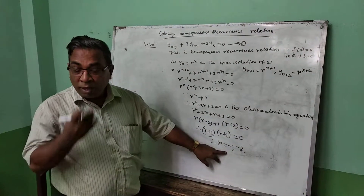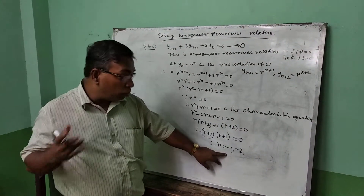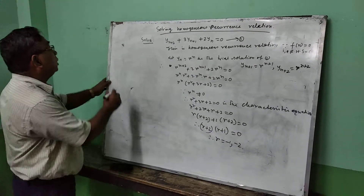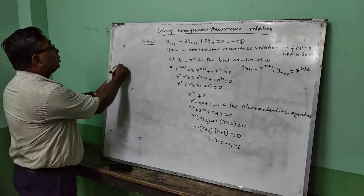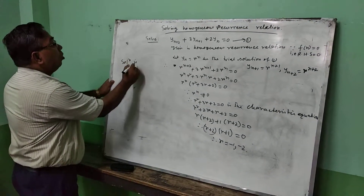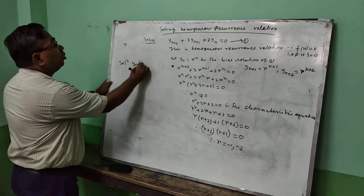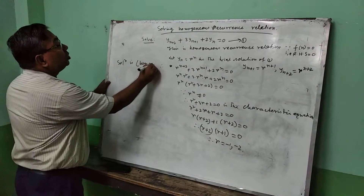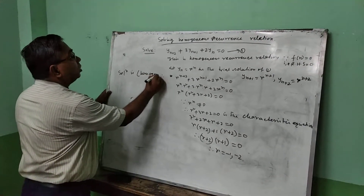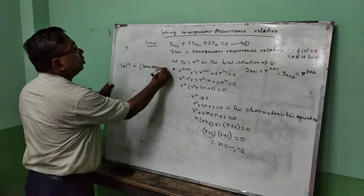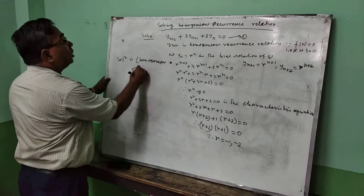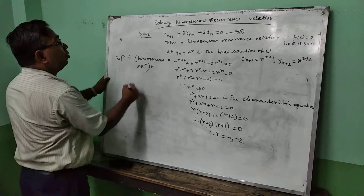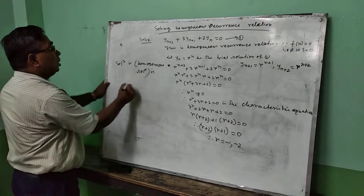These are the characteristic roots: -1 and -2. Therefore the solution, or the homogeneous solution, is: